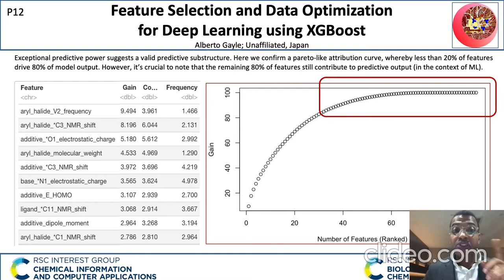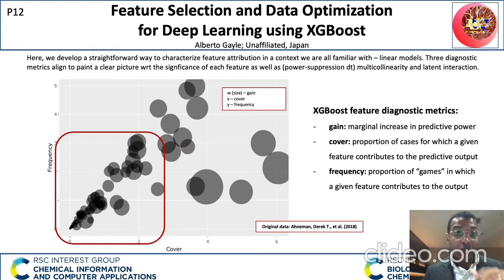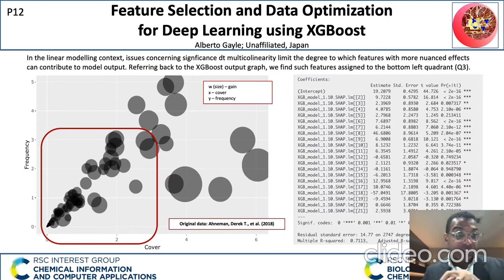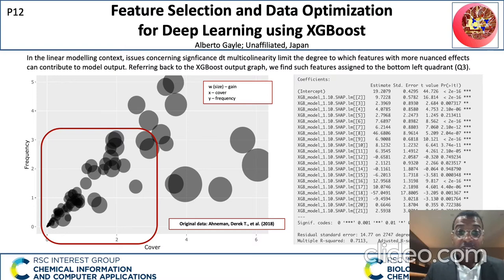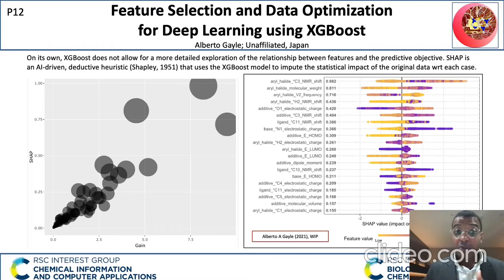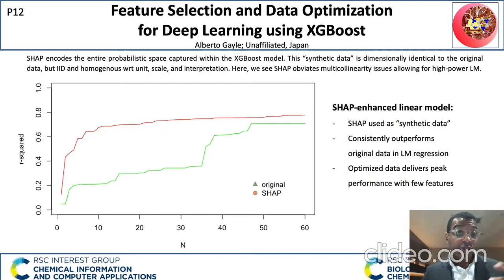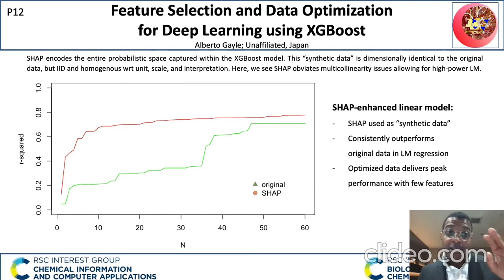However, it's crucial to note that the remaining 80% of features still contribute to predictive output in the context of machine learning. So here we develop a straightforward way to characterize feature attribution in a context we're all familiar with: linear models. Three diagnostic metrics align to paint a clear picture with respect to significance of each feature, as well as multicollinearity and latent interaction effects. In the linear modeling context, issues concerning significance due to multicollinearity limit the degree to which features with more nuanced effects can contribute to model output. SHAP (Shapley additive explanations) is an AI-driven deductive heuristic that uses the XGBoost model to impute the statistical impact of the original data with the effect of each case. SHAP encodes the entire probabilistic space captured within the XGBoost model, producing synthetic data that is dimensionally identical to the original data but IID and homogeneous with respect to unit scale and interpretation. SHAP obviates the multicollinearity issues, allowing for a high-power linear model.